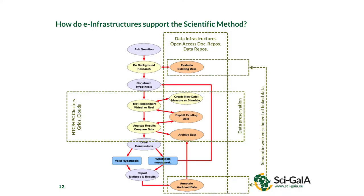You also want to connect existing data with new data you have created — you want to link data. There is an emerging set of standards called the semantic web. Through the semantic web, you can connect data. For example, you can connect environmental data with social data and maybe discover why people are migrating. Social data linked to environmental data will help you create new analyses. But to do that, you need to access different kinds of data and link them.